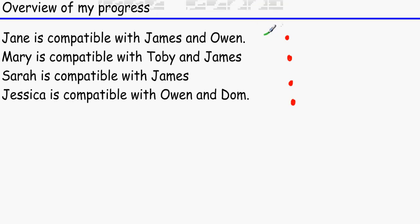So Jane, Mary, Sarah, and Jessica, and since they are compatible with the opposite sex because this is split into two bits, females and males, what you do is you just draw it for James, Owen - it doesn't matter which way it is by the way - Toby and Dom.